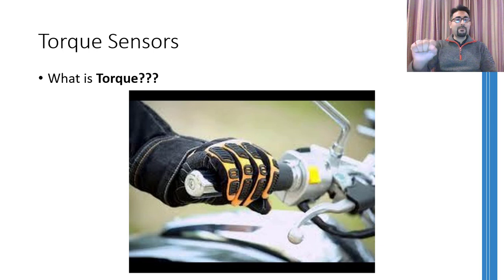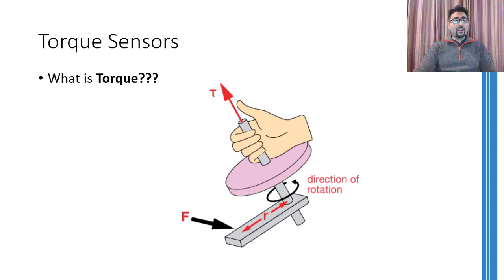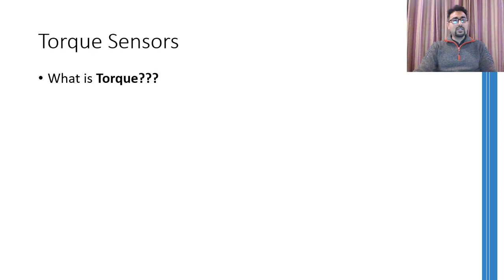Note that mathematically moment and torque are equivalent to each other. Moment is produced by a force acting on some body at a particular distance from the pivot, whereas torque is produced by a force acting on the periphery of the body such that it will try to rotate the body about its own axis.